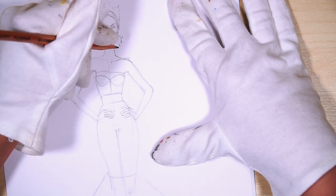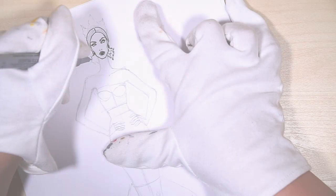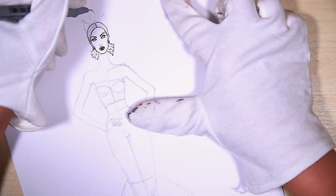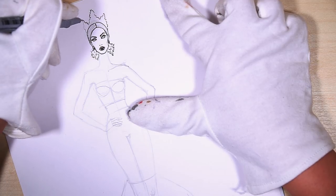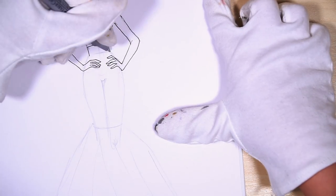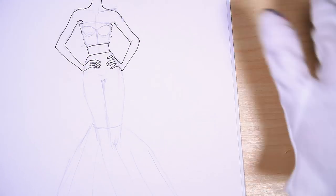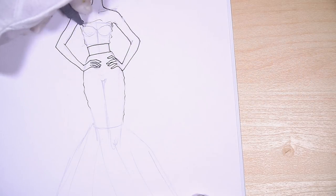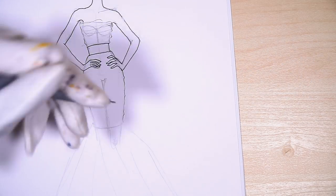Next I'm using fineliner 0.1 and I'm just outlining all the details that I need. It depends on your style. Usually in my illustration, I always outline everything. So now just showing some draping.